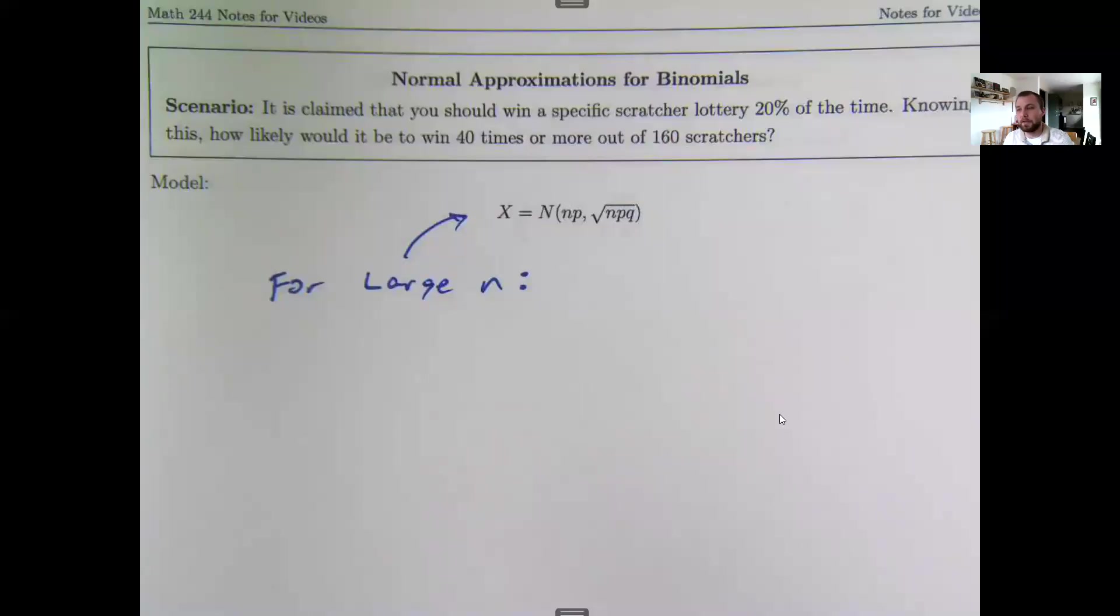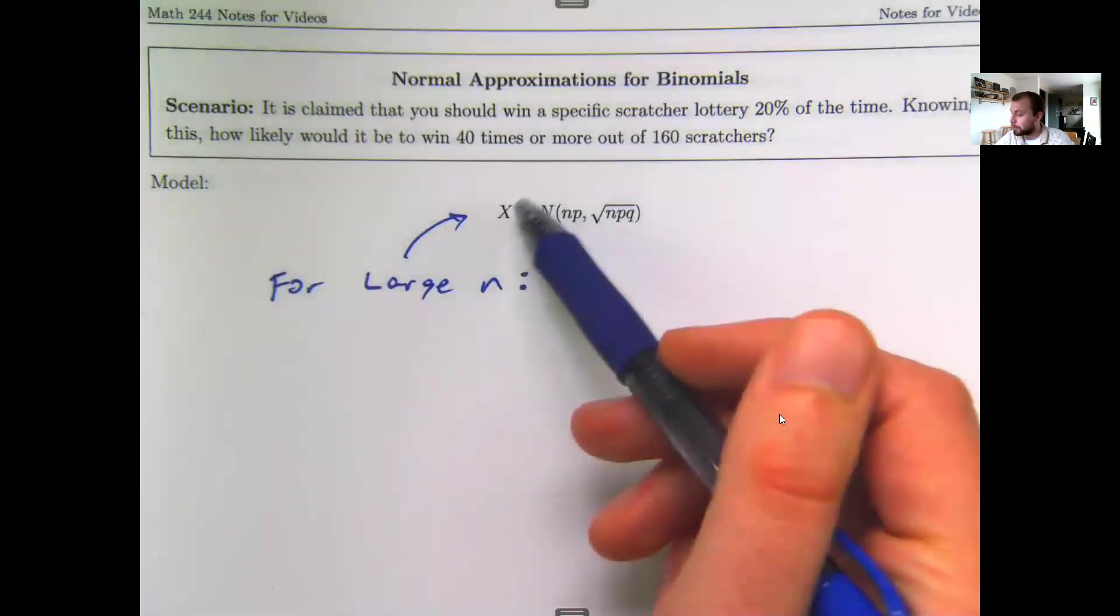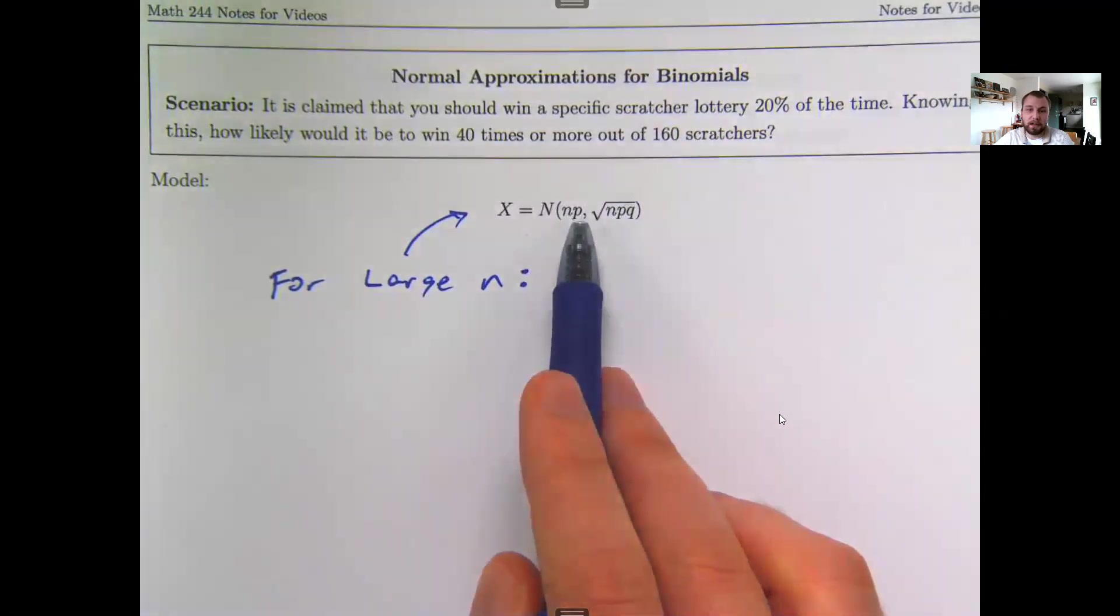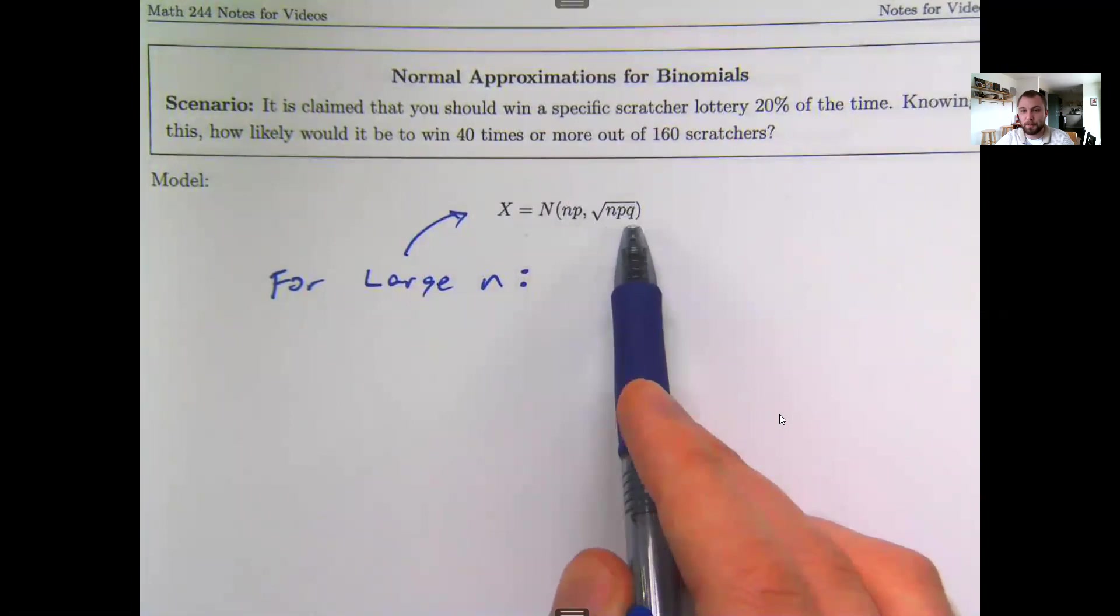Let's look at the normal approximation for binomials. As the name suggests, for large n my binomial distribution looks approximately normal with a center of n times p (n is the number of trials, p is my probability of success) and a standard deviation of the square root of n times p times q. Again, that's number of trials, probability of success, and then q is my probability of failure.